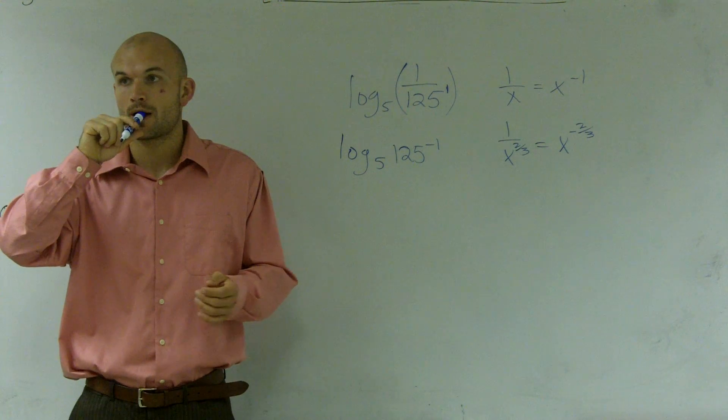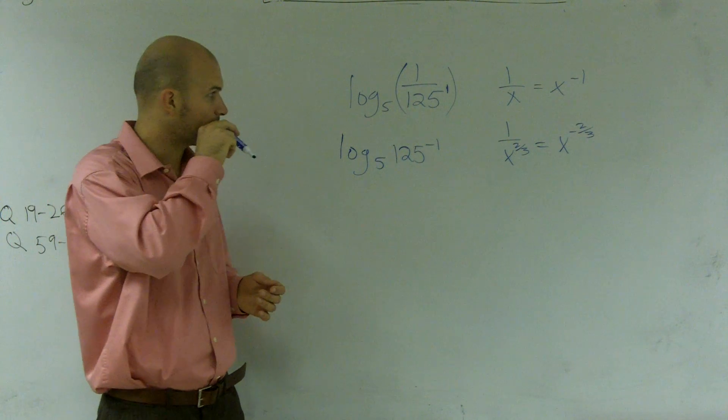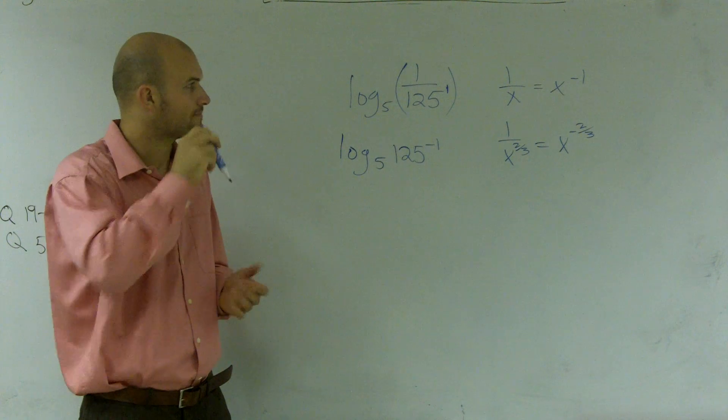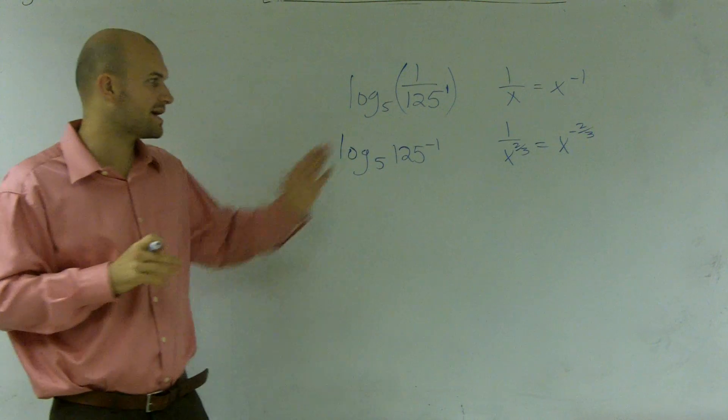Yes, go ahead. Why wouldn't it just be a negative 125? Oh, because the exponent is negative. It's exponent, right. The exponent is negative.